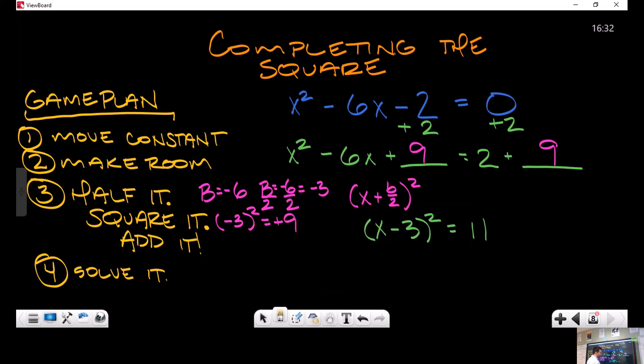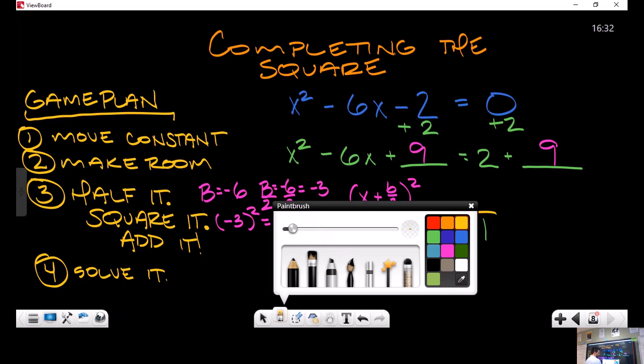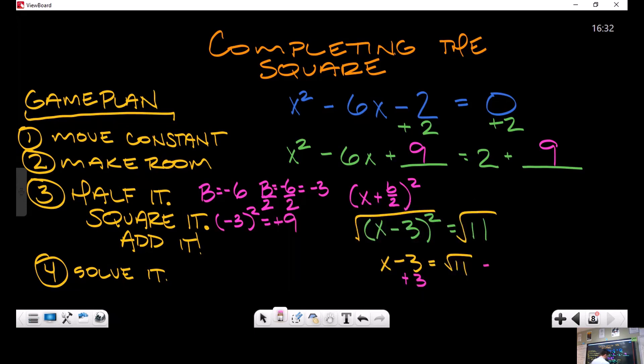Now we have created our perfect square. We can solve this just like a regular square root problem. Take the square root of both sides. This is going to be x - 3 equals... stay sharp kids, don't forget the plus or minus like I just did... ±√11. Add 3 to both sides. Two solutions will be x = 3 ± √11.